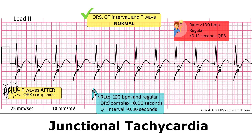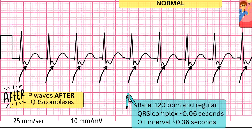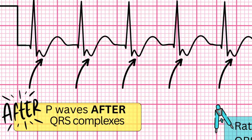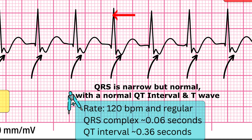Here you can see an example of junctional tachycardia. We have a heart rate of 120, which checks the box of greater than 100 beats per minute. When we go to look for our P wave, it is behind the QRS complex — not where it should be. This is in lead II, so you can see the P wave is inverted and it's right before the T wave. The QRS complex is narrow, and we have a normal QT interval and T wave.